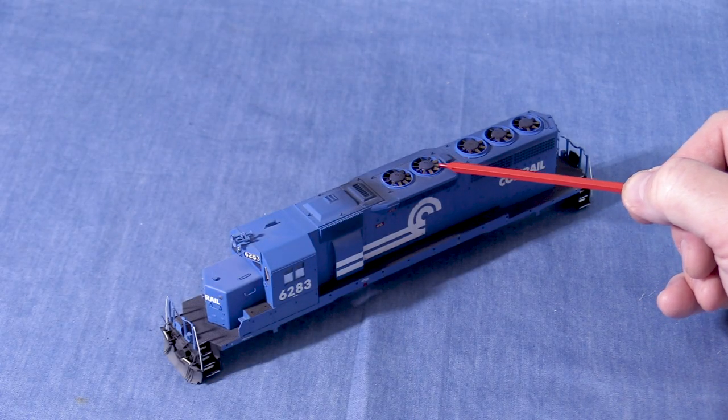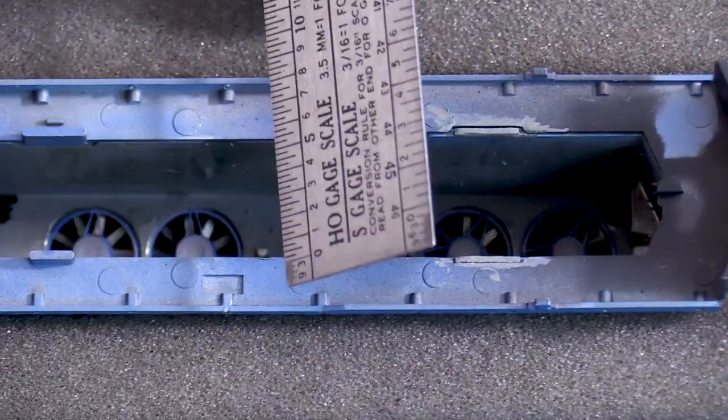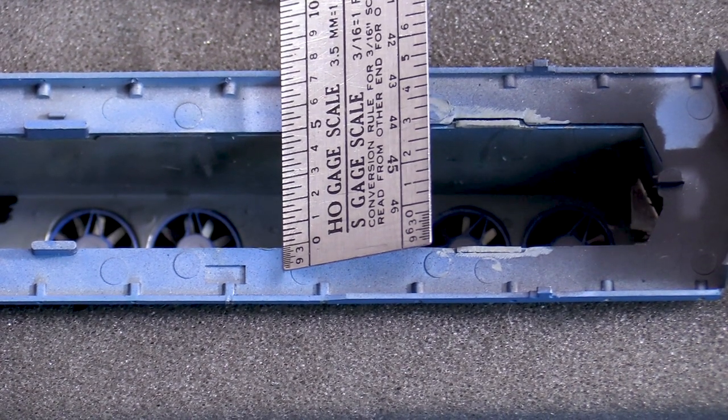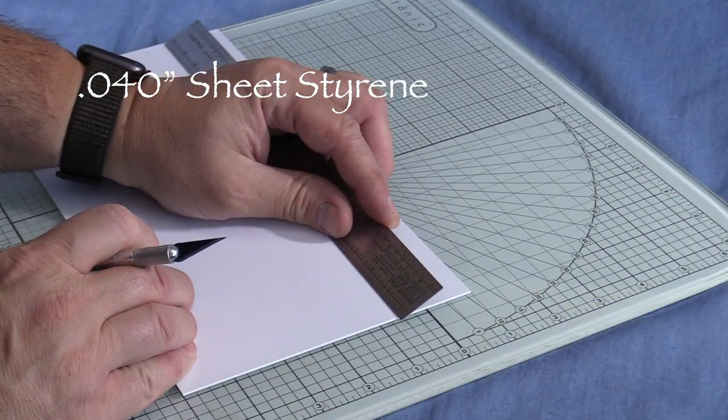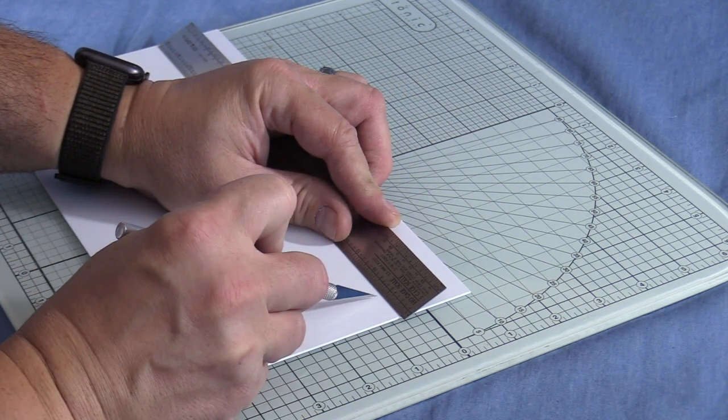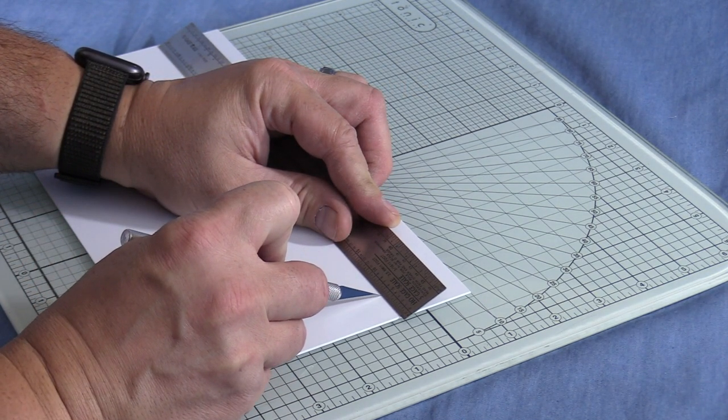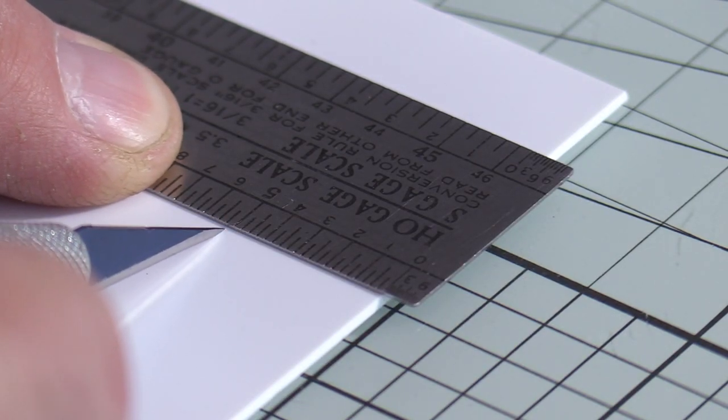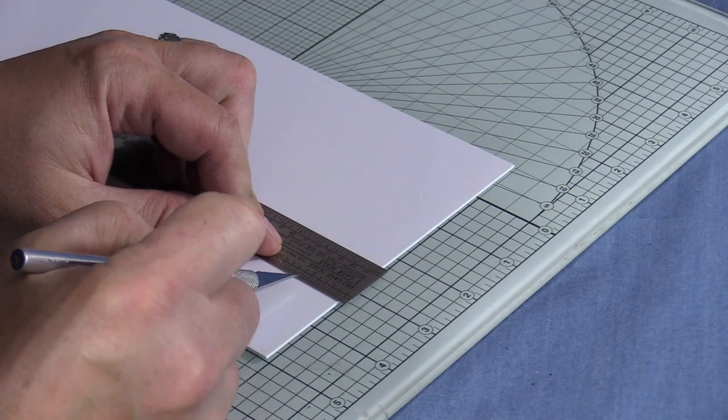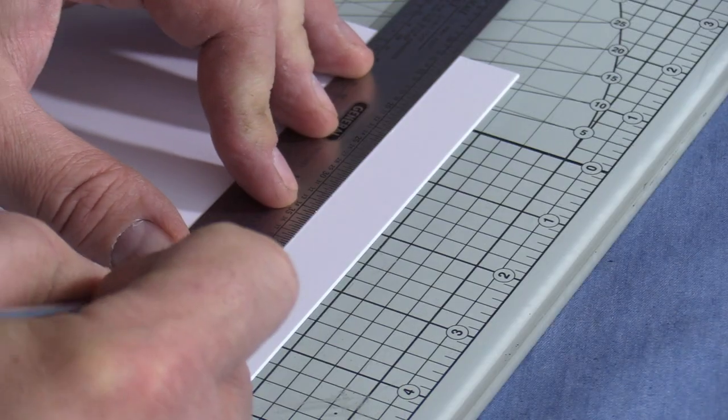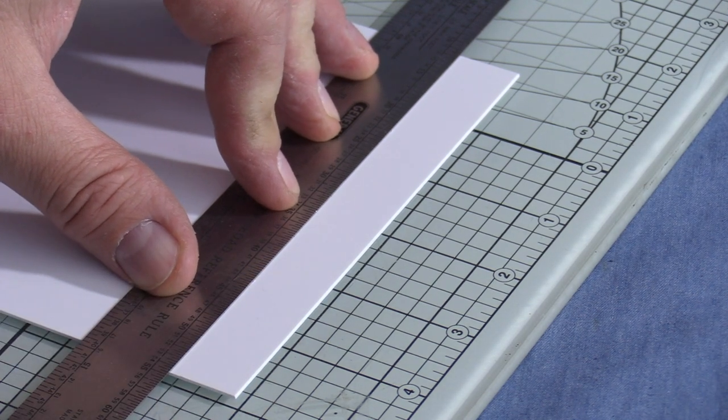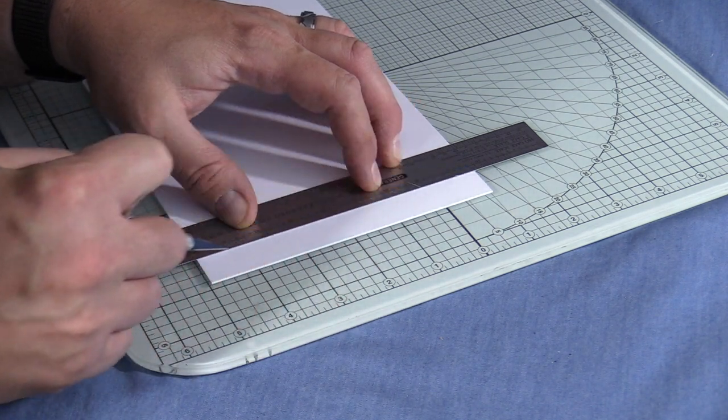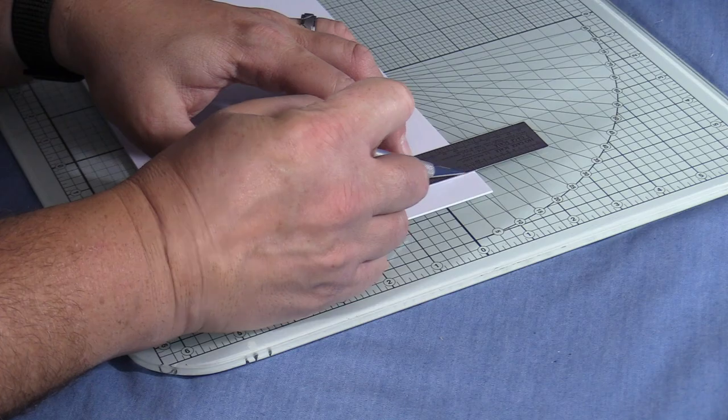I'll start by measuring the interior width of the shell. It's about 5 and 1 quarter scale feet. I'm going to use some 040 sheet styrene to make my barrier. I like this thickness because it's fairly rigid but it's still thin enough to be easy to work with. I'll measure 5 and 1 quarter scale feet from one edge and make a mark with my X-Acto knife. Next I'll make a second mark in a different spot. Now I can line my straight edge up along both marks and start scoring the styrene. I like to use a plate glass cutting surface for this type of work. I got this one at a craft store. It even has markings on it to help line up cuts.